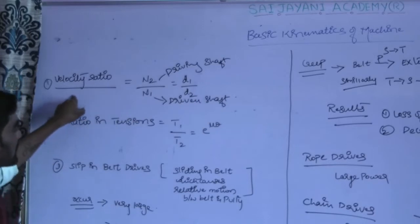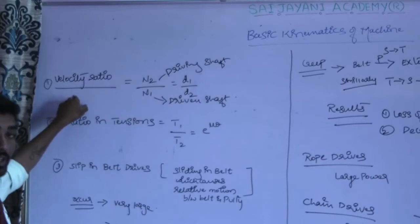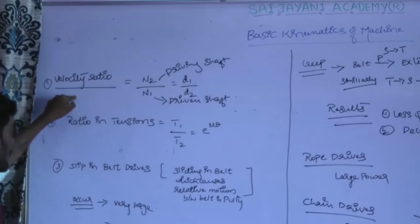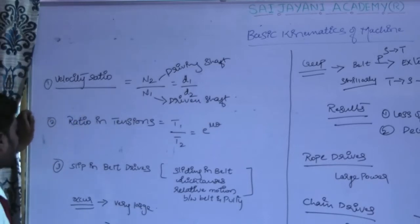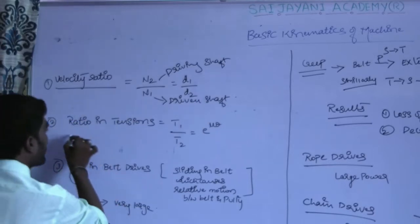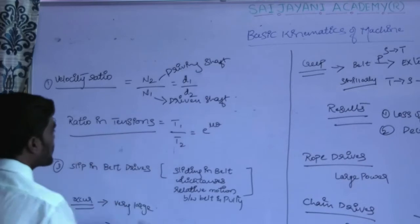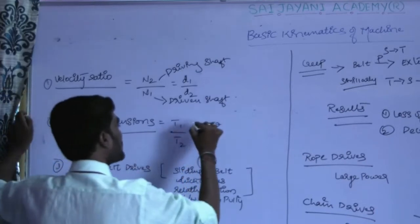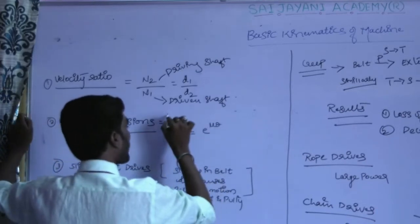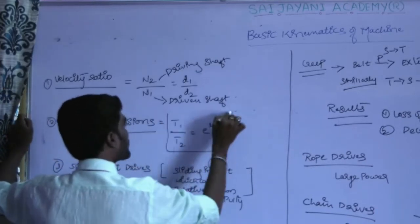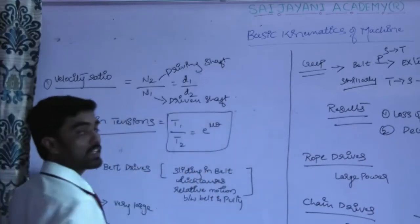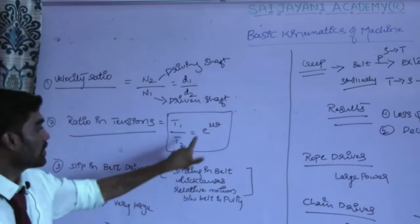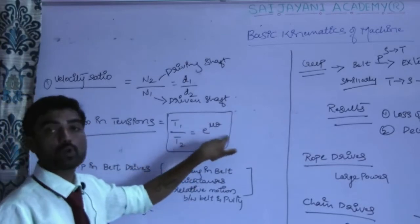Next comes the ratio in tension. We usually see this formula: T1 divided by T2 is equal to E raised to mu theta. This is the important formula for ratios in tension.